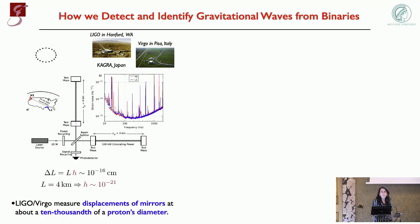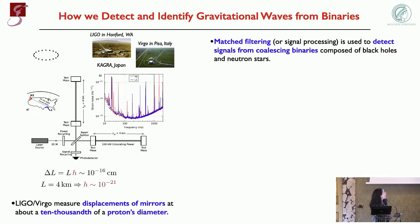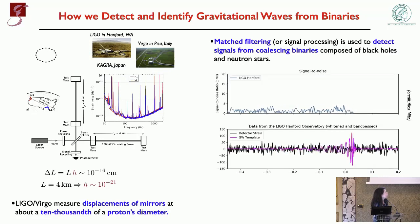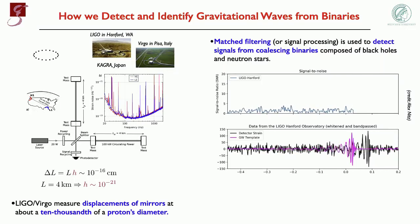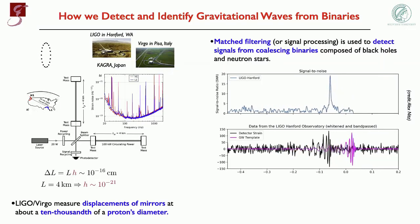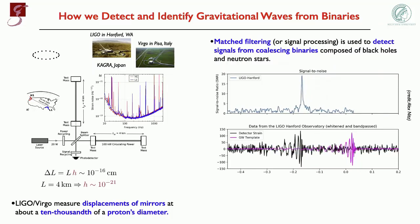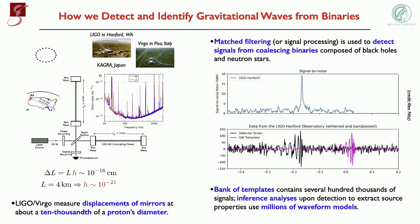The waves are produced by black holes and neutron stars. The main sources are binary systems, and we have the luxury that we can solve the Einstein equation to predict the shape of the waveform. To detect them, we use matched filtering or signal processing. We have a bank of templates in pink; we correlate with the data, and if there is a signal, the signal-to-noise ratio goes up. We can claim a detection if that threshold is passed, fixed by the known noise properties of the detector. We need hundreds of thousands of templates, or millions of them when we do the follow-up analysis using Bayesian methods.